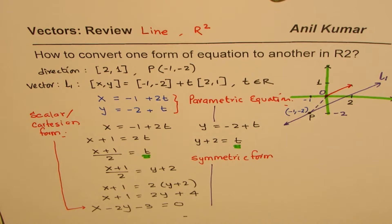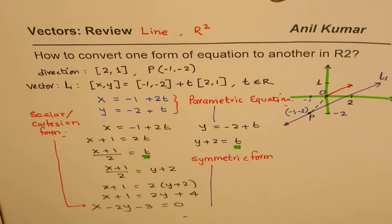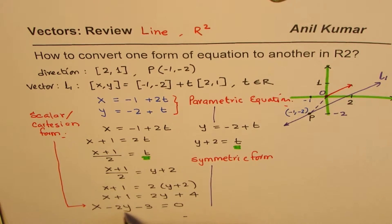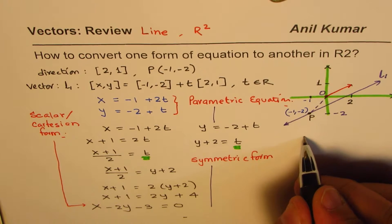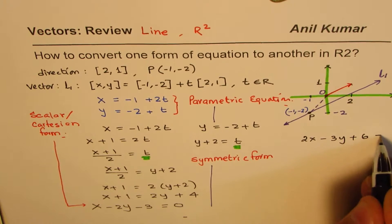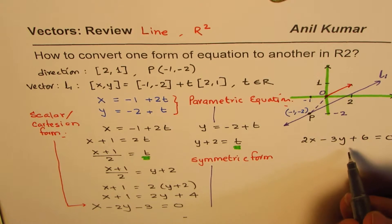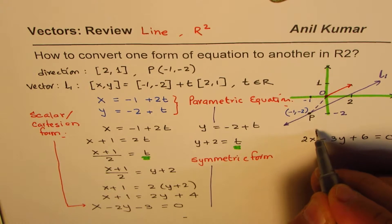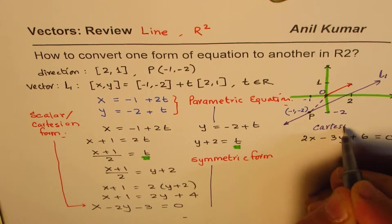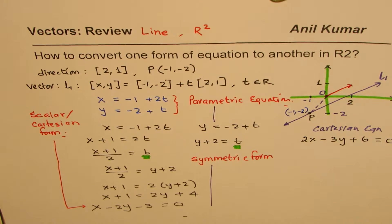As an added example, we can actually do the reverse — start from the Cartesian form and go back. Let me write down another equation: 2x minus 3y plus 6 equals 0. We are taking this example to illustrate how to go from the Cartesian equation to the other forms.